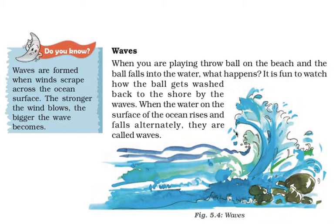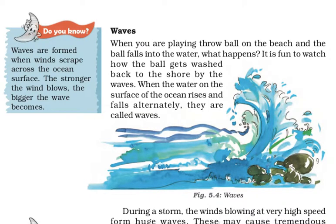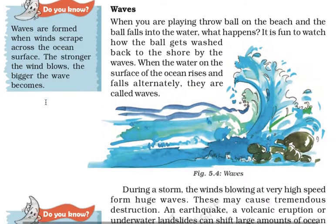Next is waves. When you are playing throwball on the beach and the ball falls into the water — it is fun to watch how the ball gets washed back to the shore by the waves. When the water on the surface of the ocean rises and falls alternately, they are called waves. Waves are formed when winds scrape across the ocean surface. The stronger the wind blows, the bigger the wave becomes.